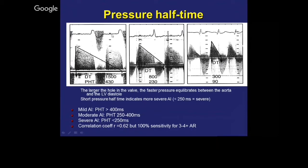We tend to use more of the pressure half-time for aortic regurgitation, which is the same concept as mitral stenosis, just in the opposite direction. In aortic regurgitation, you want the pressure half-time to be long. If you have a sharp deceleration slope, that is acute aortic regurgitation, and the patient generally does not tolerate this well because the ventricle has not had enough time to dilate to cope with that regurgitation. If pressure half-time is more than 400 milliseconds, that is mild aortic regurgitation; if it's less than 250, that is severe aortic regurgitation; anything in between is moderate.